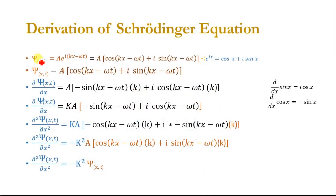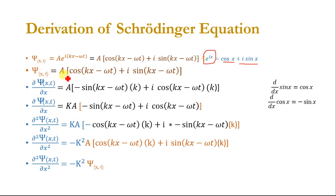We know psi(x,t) is equal to A times e to the power iota(kx minus omega t). Expanding this using Euler's equation — e to the power iota x equals cos(x) plus iota sin(x) — we get psi(x,t) is equal to A times (cos(kx minus omega t) plus iota sin(kx minus omega t)).